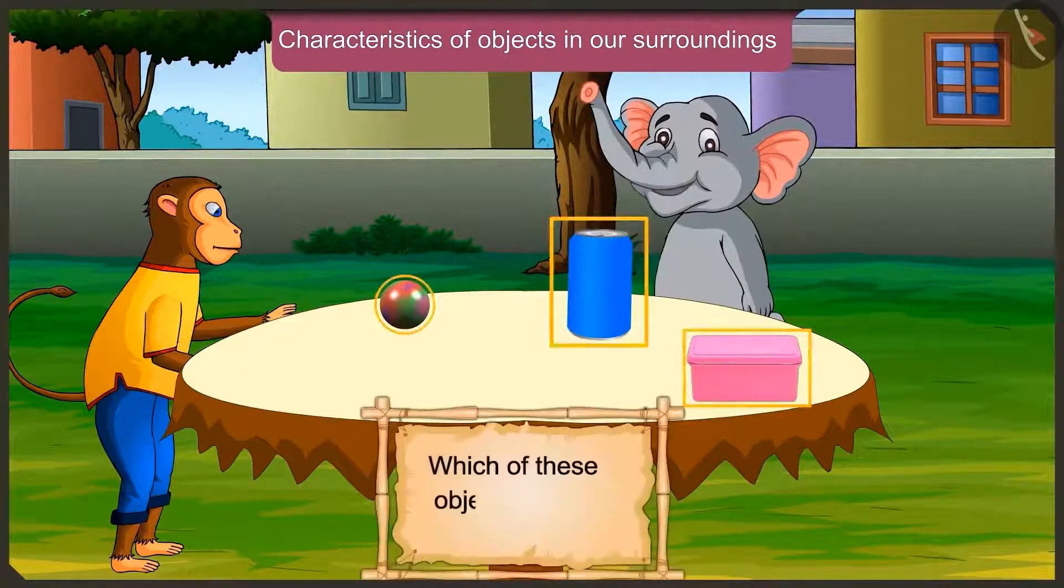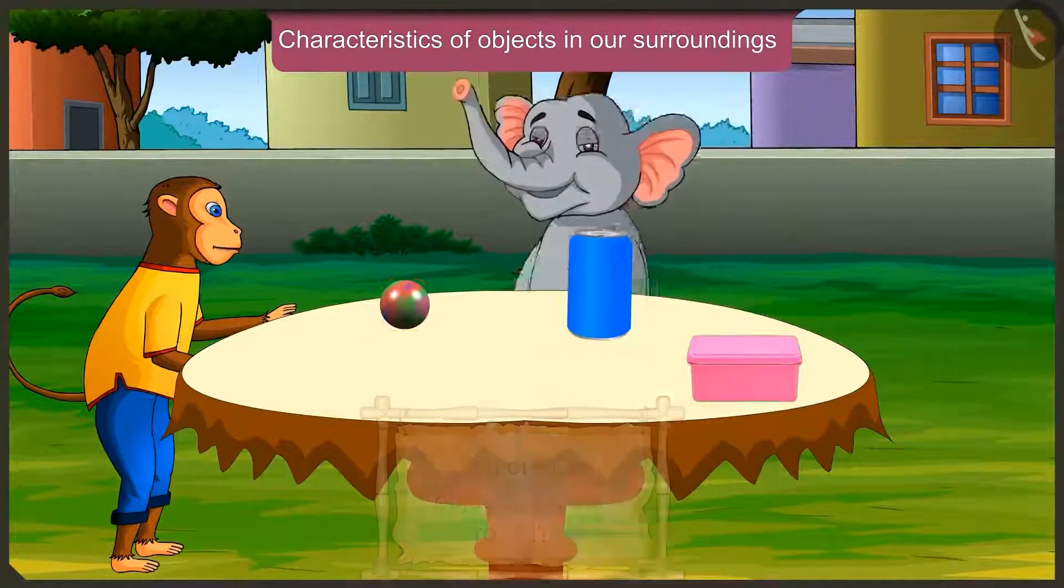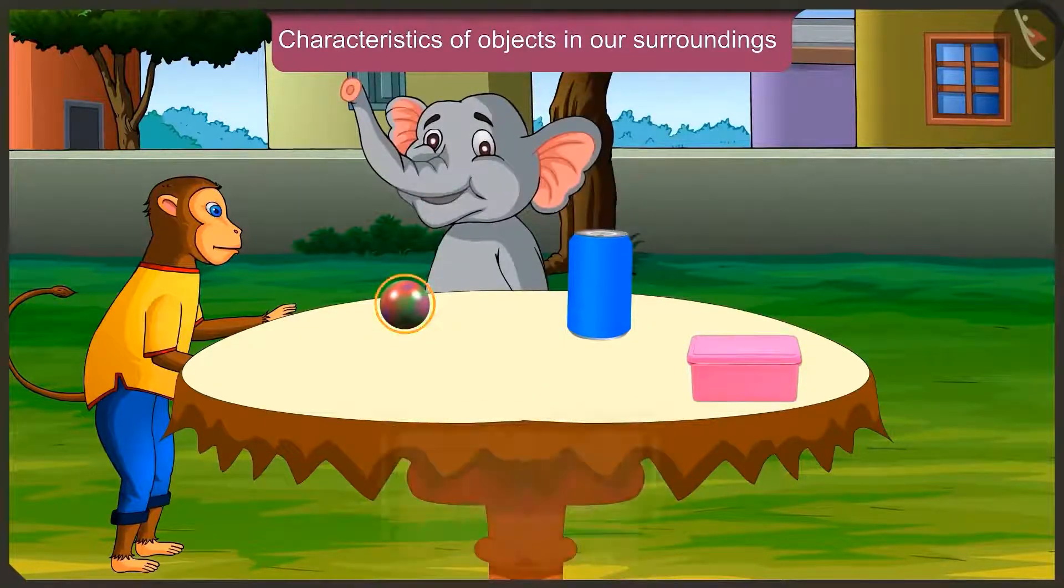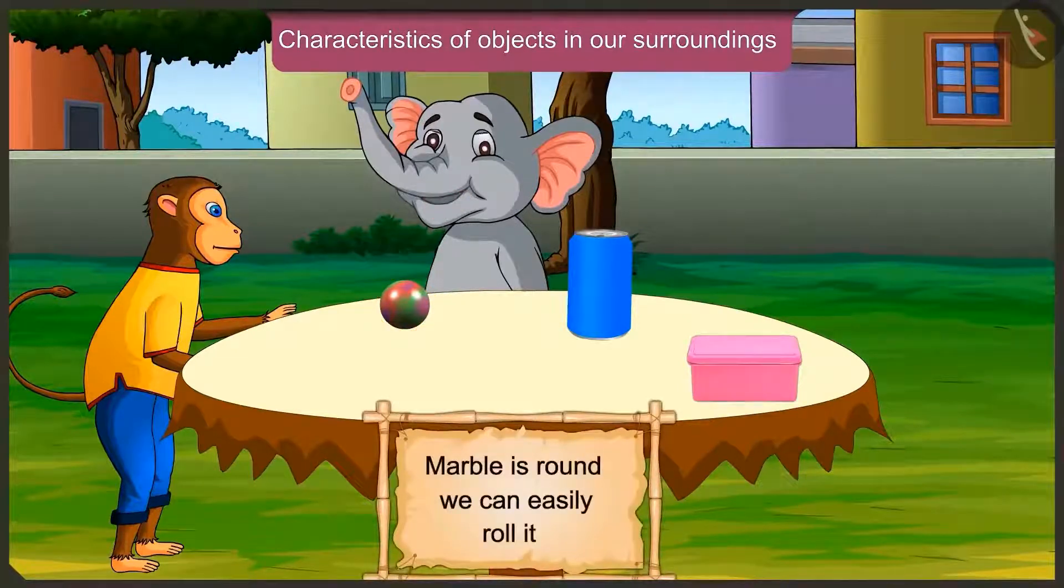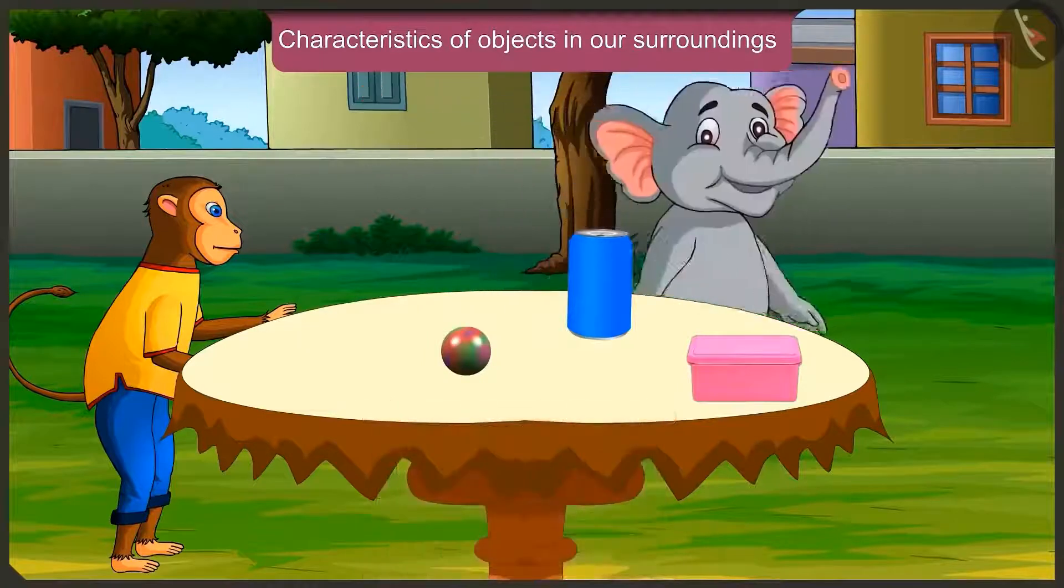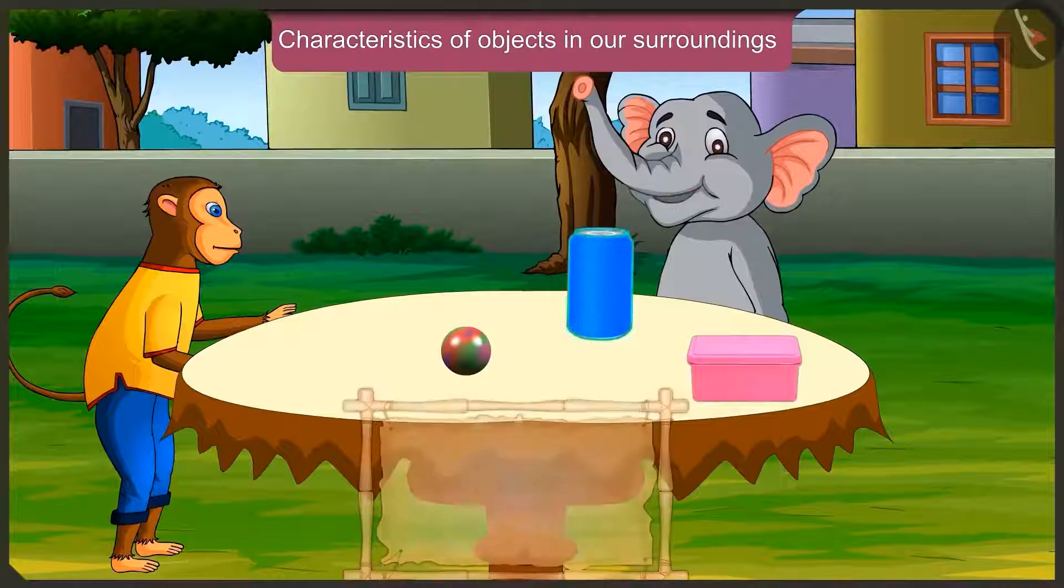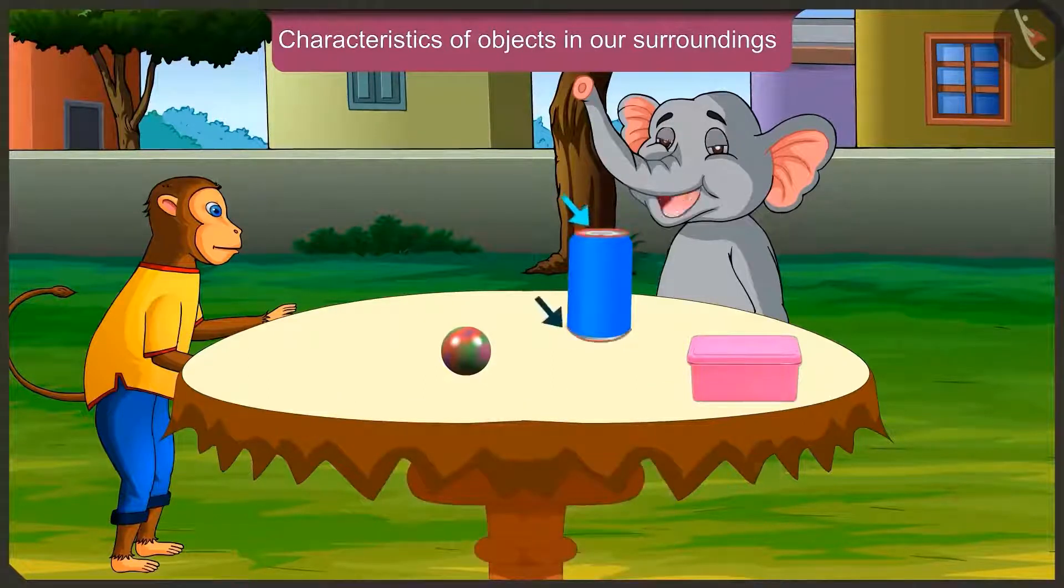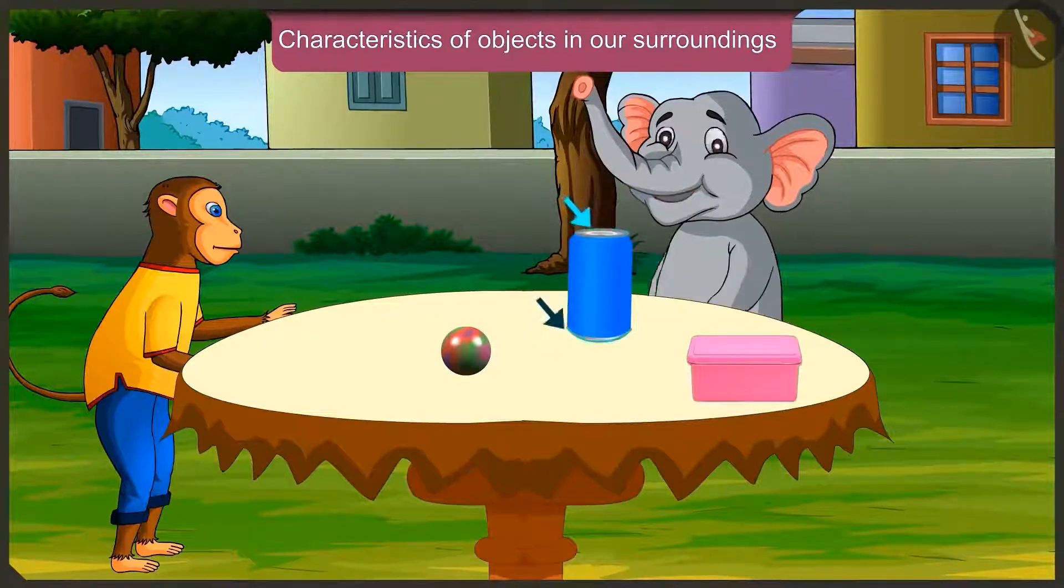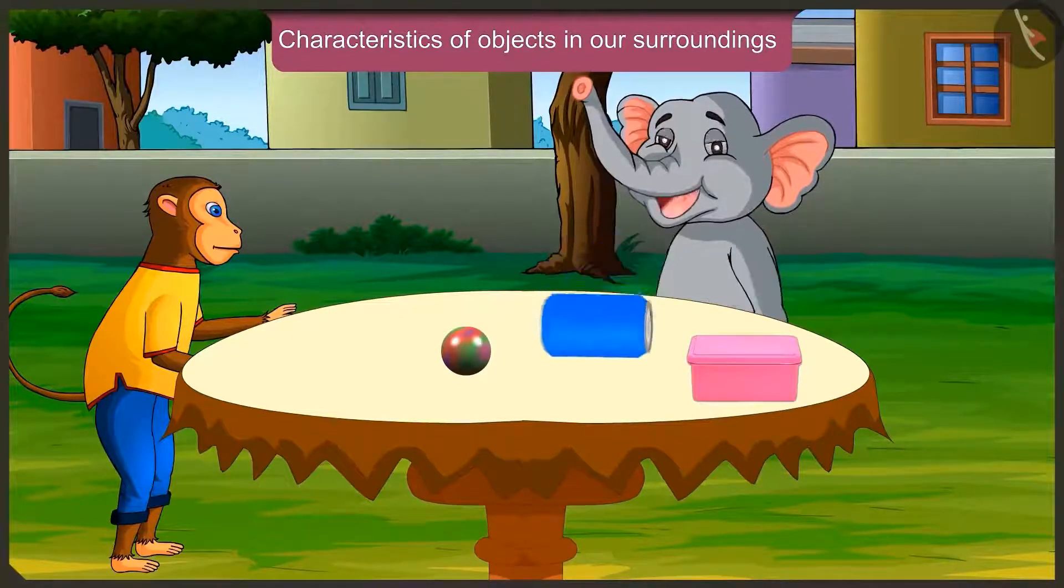Very good. Come on now, Appu, tell me one thing. Which of these objects can be rolled? Look, this marble is round. We can easily roll it like this. And as you can see, this tin can is cylindrical. Cylindrical objects have a flat surface on top and also on bottom. That's why we can slide them. But if its surface is curved, we can also roll them like this.